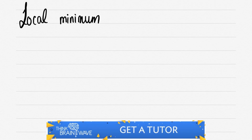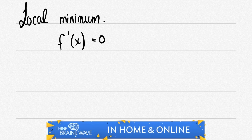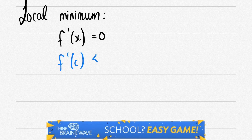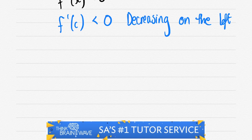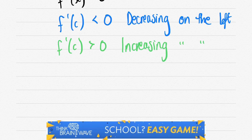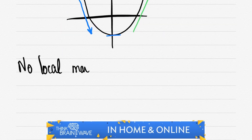Let's look at a local minimum. For a local maximum, the first derivative is positive on the left hand side and negative on the right hand side. It's quite the opposite for a local minimum. The first derivative is always less than zero, which means it's decreasing on the left hand side. However on the right hand side it's always positive, therefore it's increasing on the right. The blue represents the left and the green represents the right.